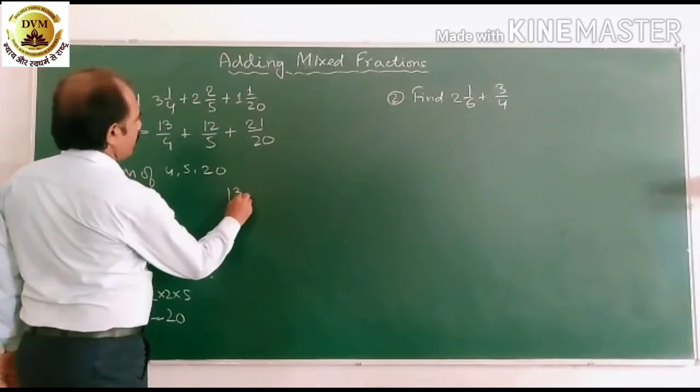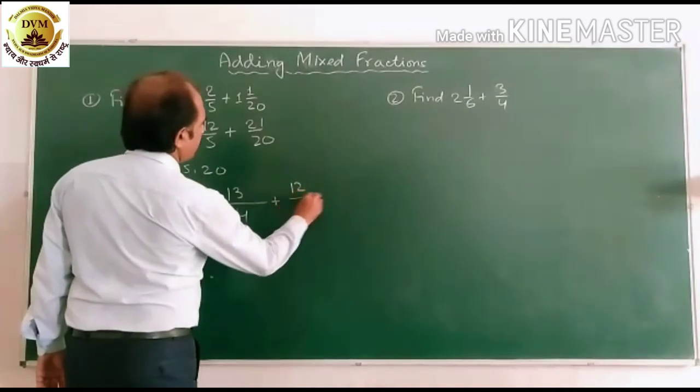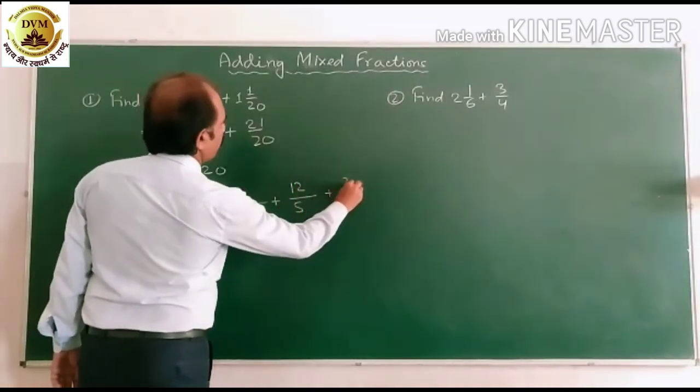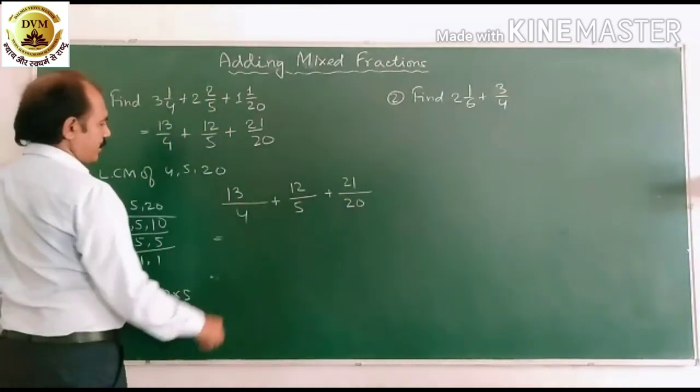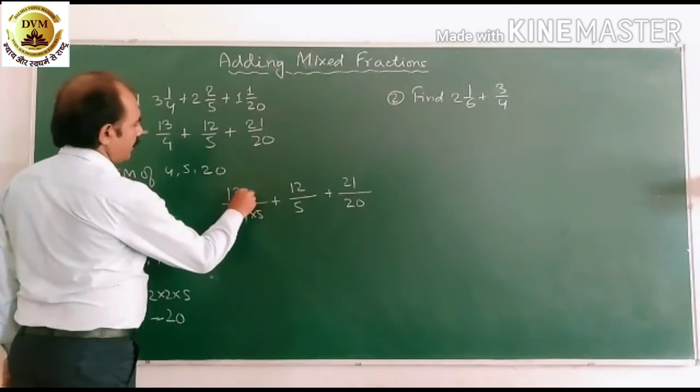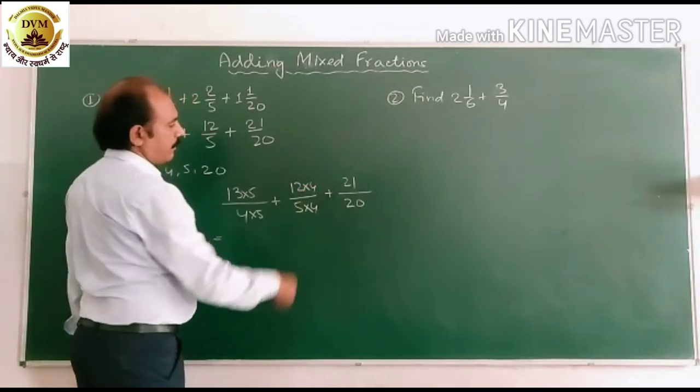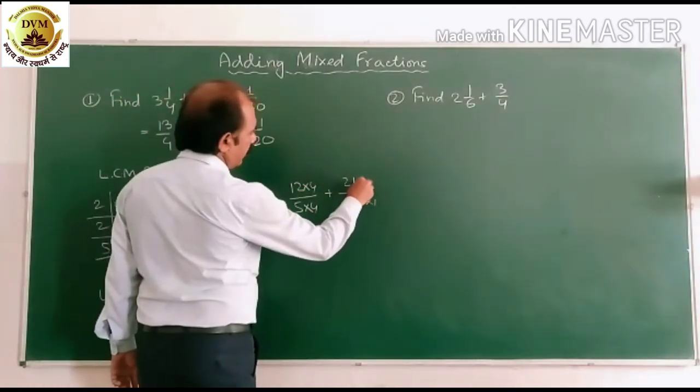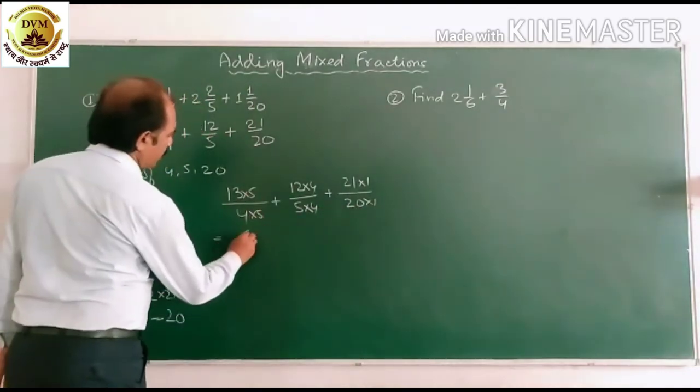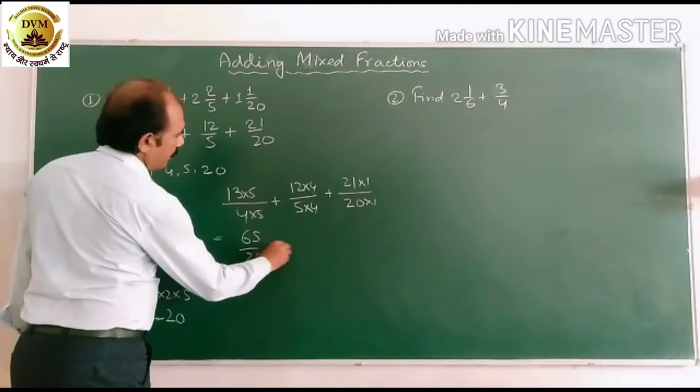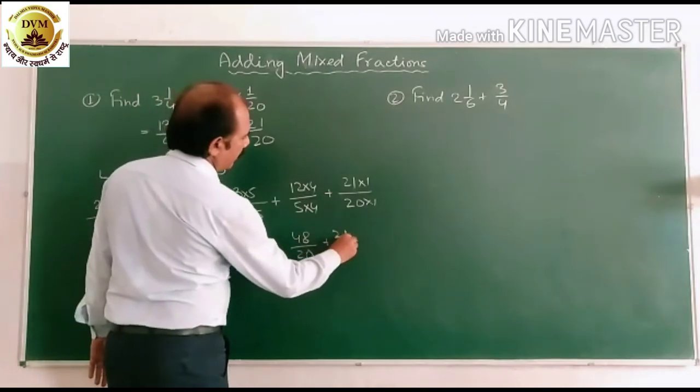So 13 by 4 plus 12 by 5 plus 21 by 20. We have to change into like fraction. 4, 5, plus 20. 5 times 4, 20. Denominator also upon denominator 4. 2 times 1. Because 20 is the LCM. So this will become 65 by 20 plus 48 by 20 plus 21 by 20.